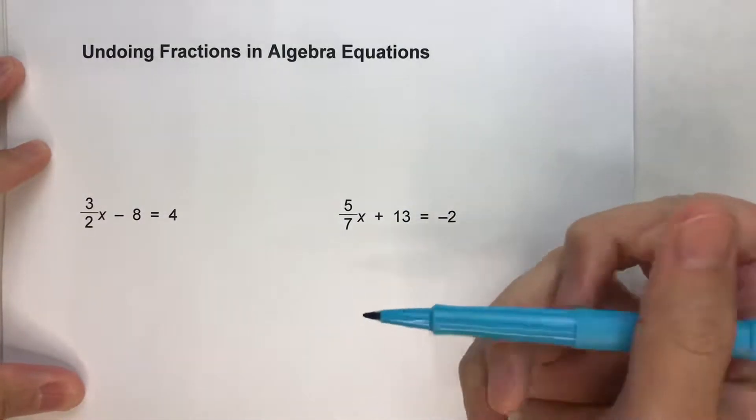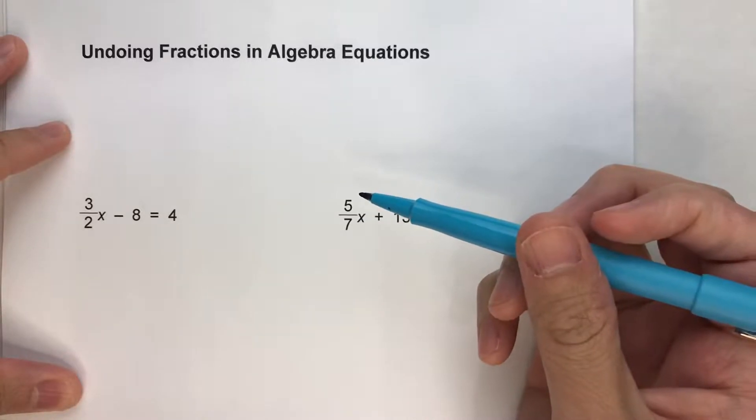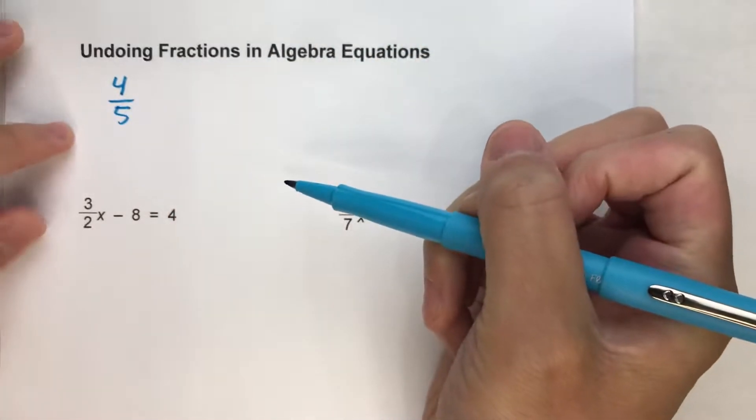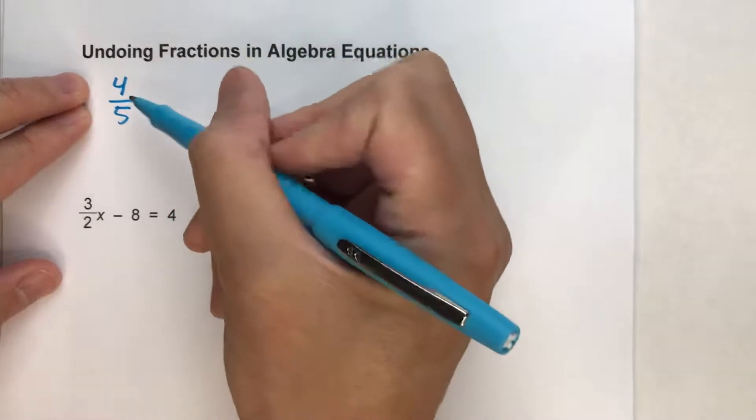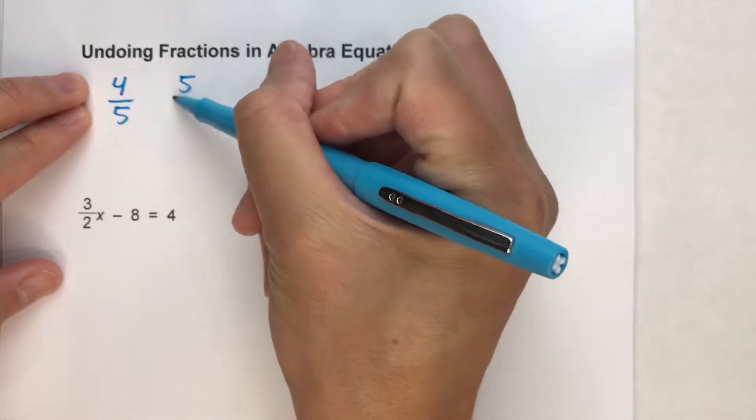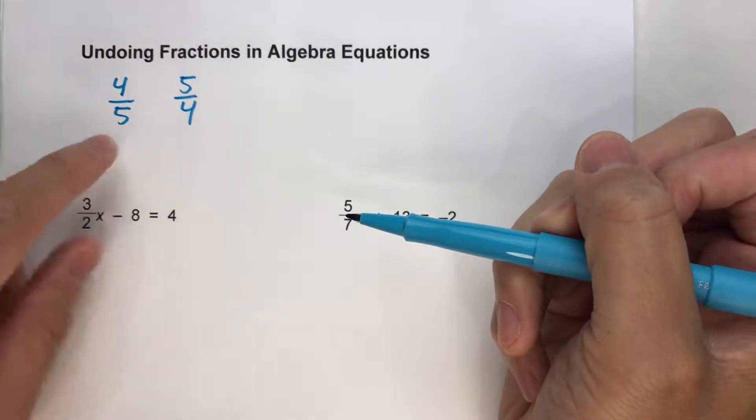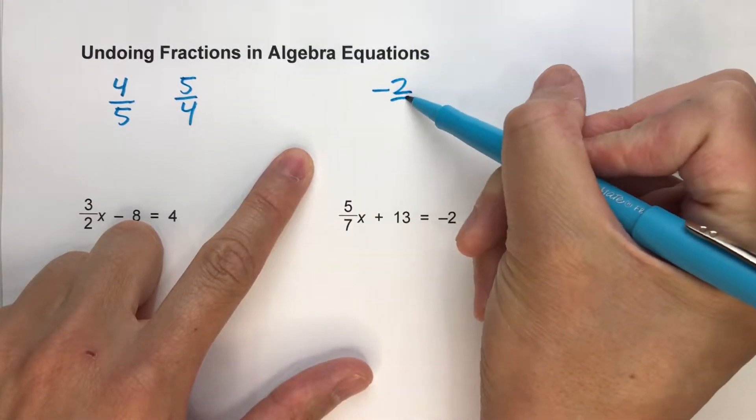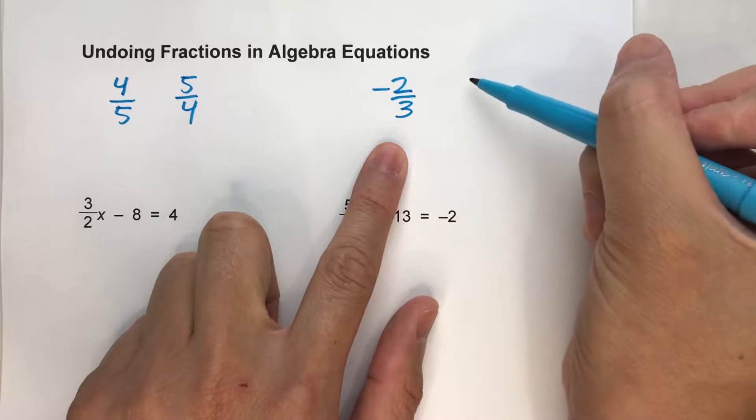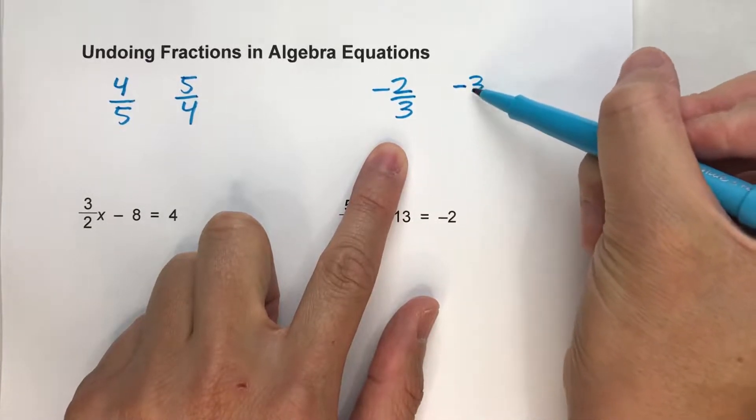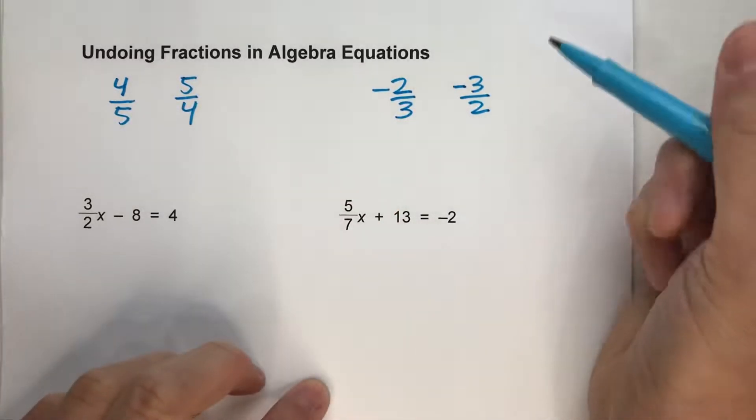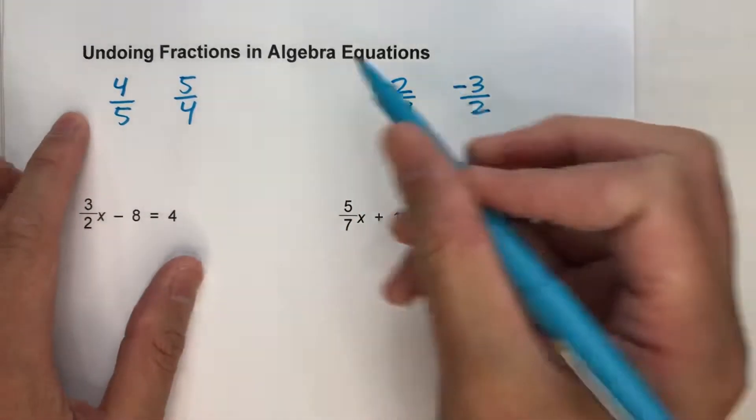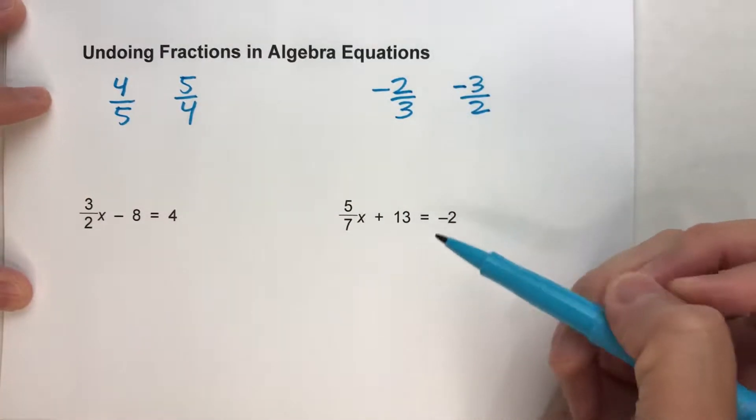Now before we can do this, we have to know what a reciprocal is. So if you have any fraction, let's say 4 fifths, the reciprocal of the fraction is that same fraction flipped upside down. So the reciprocal of 4 fifths is 5 fourths. Similarly, if I have the fraction negative 2 thirds, the reciprocal of that is negative 3 over 2. So it's the same fraction flipped upside down. And notice, it doesn't change the positive or negative. All it does is flip it upside down.